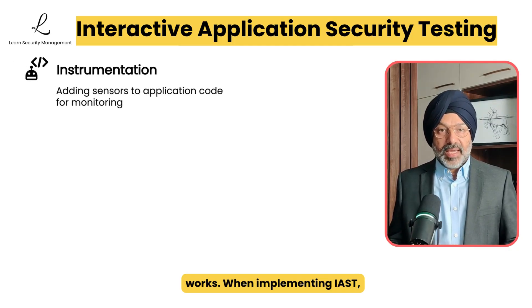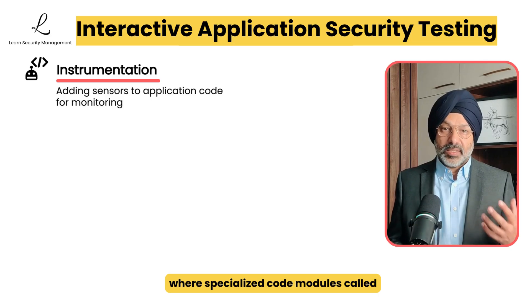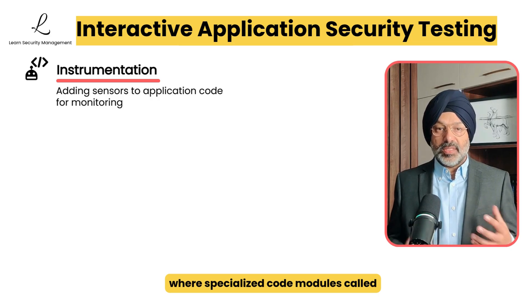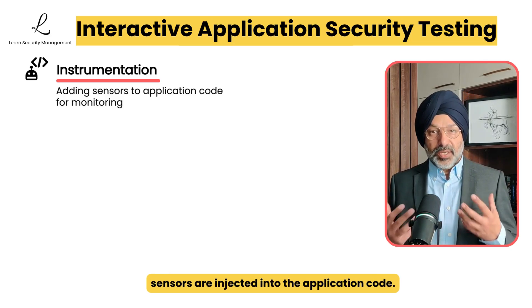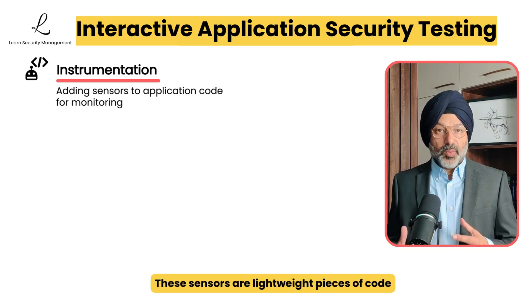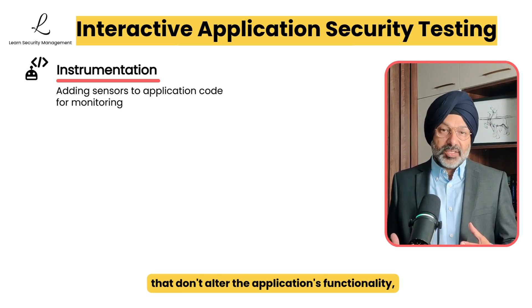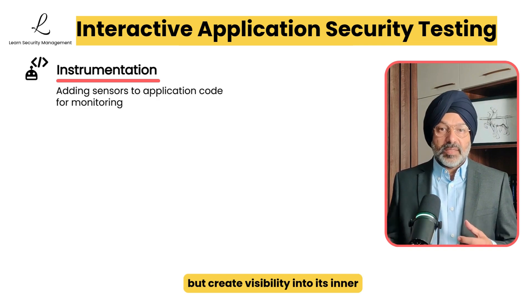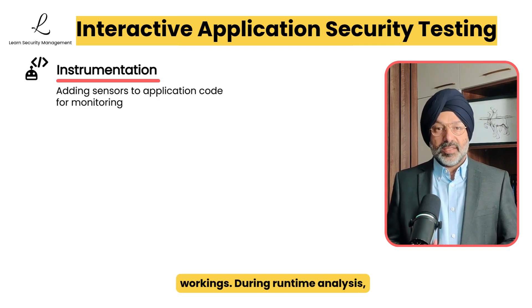Now let's break down how IAST actually works. When implementing IAST, the process begins with instrumentation, where specialized code modules called sensors are injected into the application code. These sensors are lightweight pieces of code that don't alter the application's functionality, but create visibility into its inner workings.